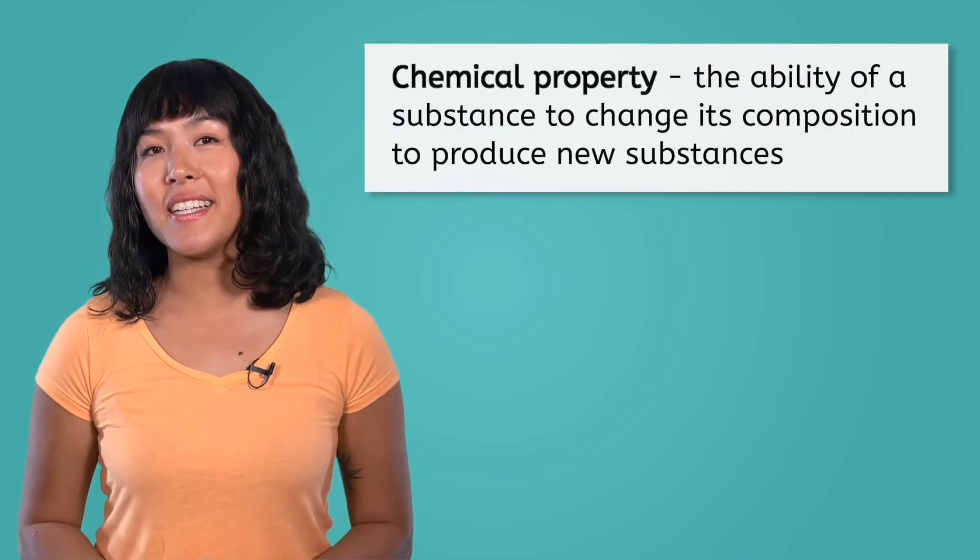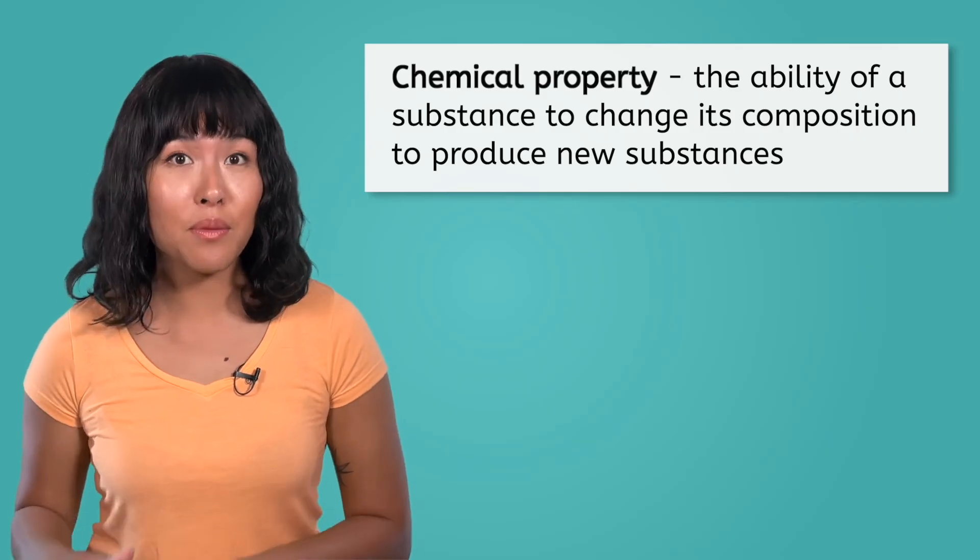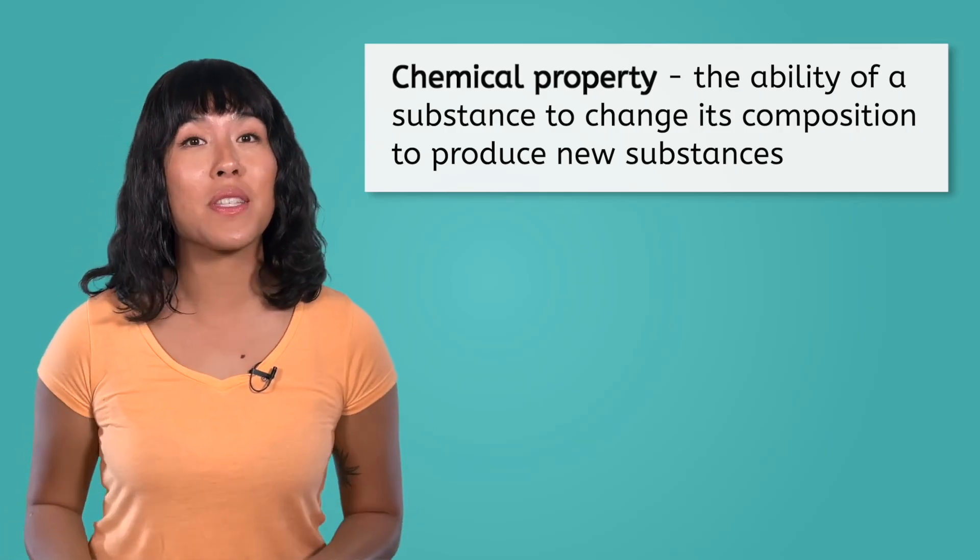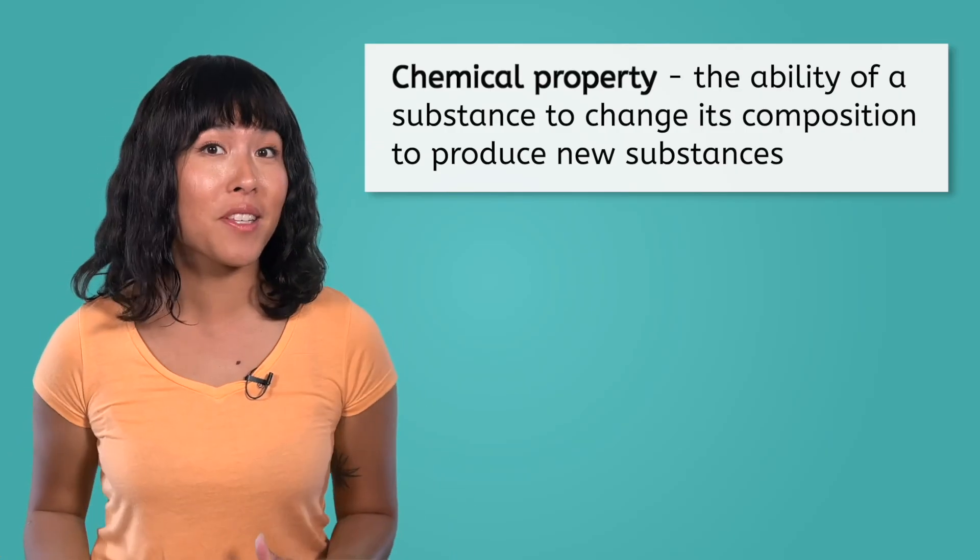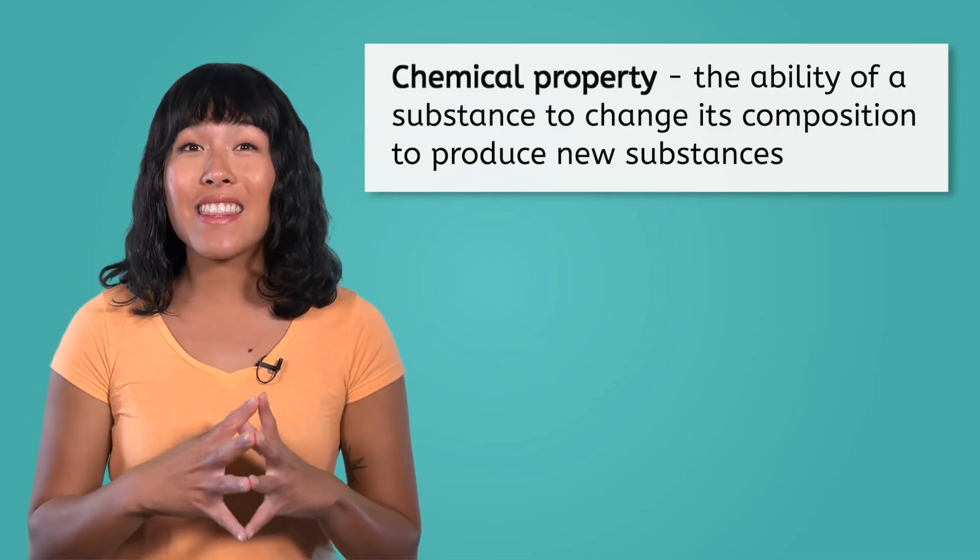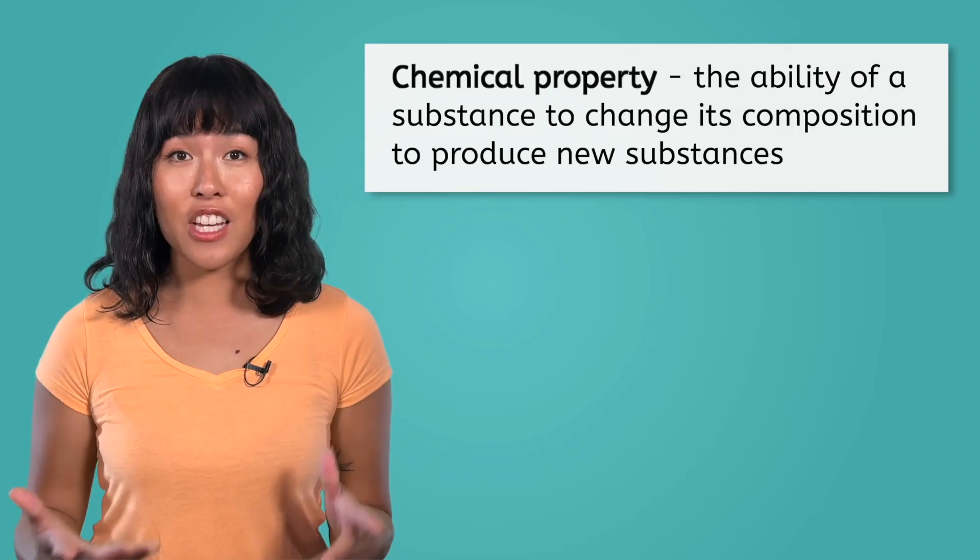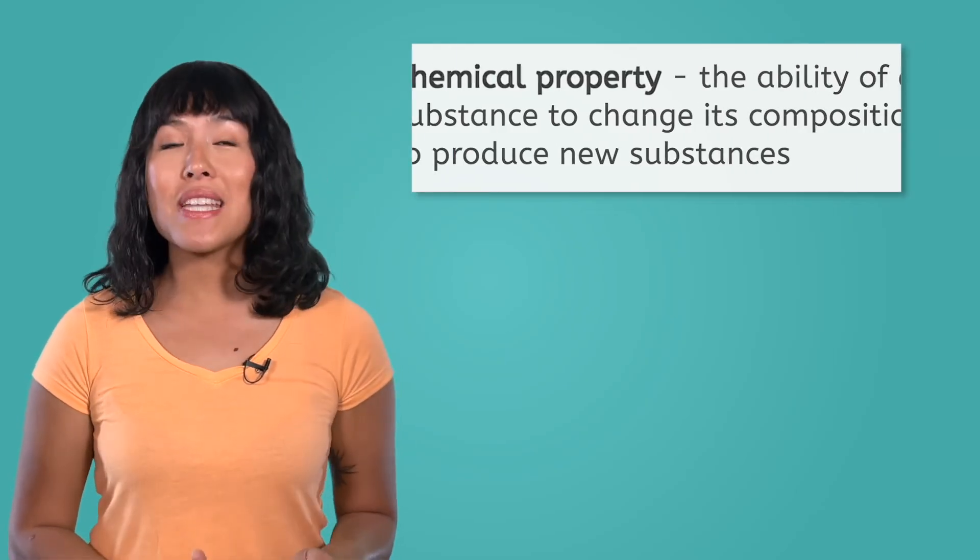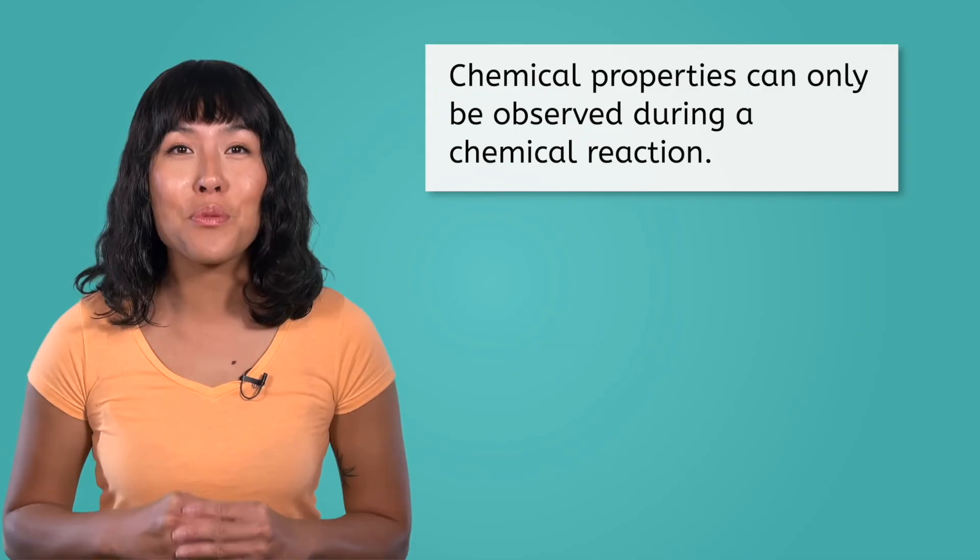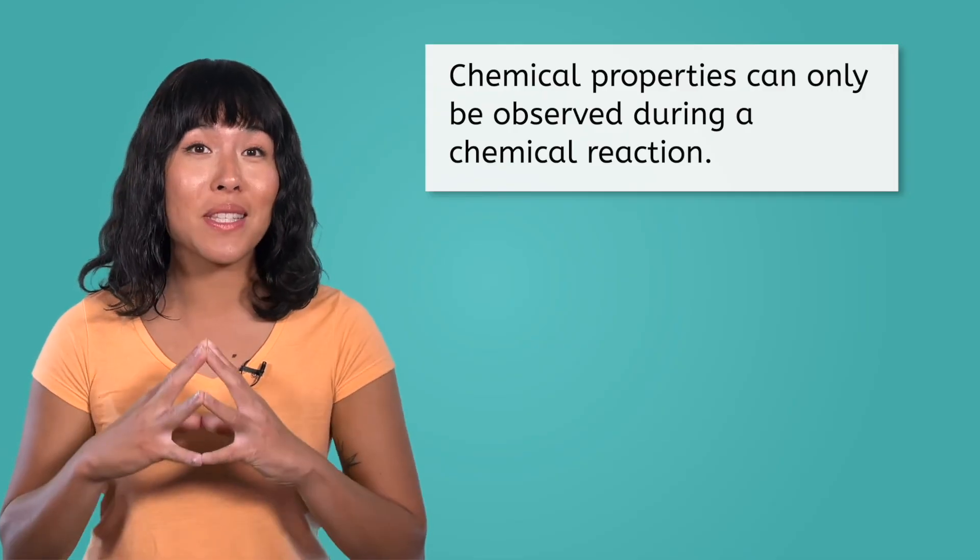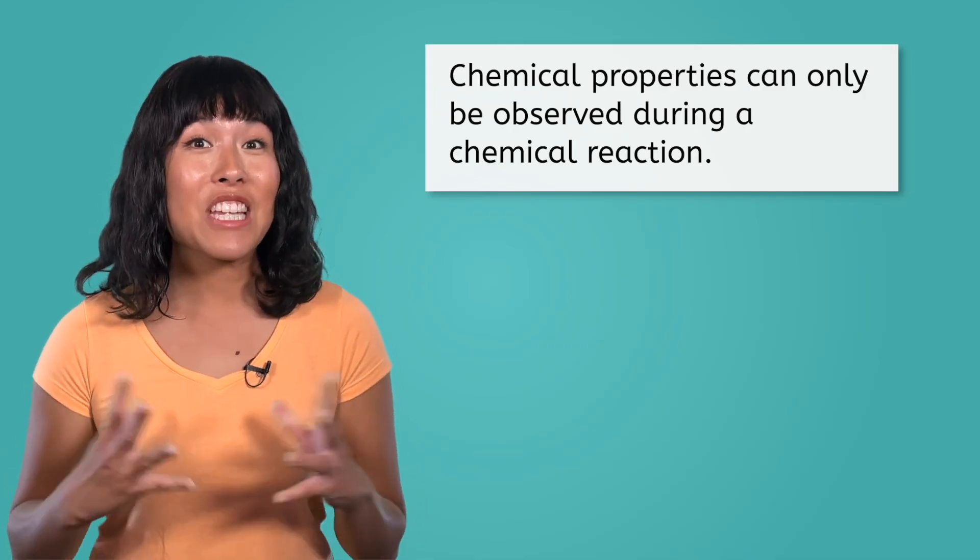A substance's chemical properties are a little harder to notice than its physical properties. A chemical property is the ability of a substance to change its composition to produce new substances. Meaning that at the atomic level, you end up with a different substance than you started with. That means chemical properties can only be observed when the chemical composition of the substance changes.